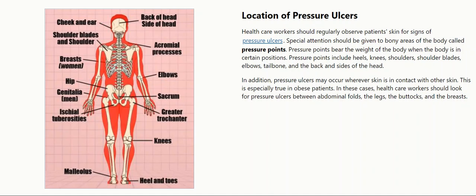Location of Pressure Ulcers. Healthcare workers should regularly observe patient skin for signs of pressure ulcers. Special attention should be given to bony areas of the body called pressure points. Pressure points bear the weight of the body when the body is in certain positions. Pressure points include heels, knees, shoulders, shoulder blades, elbows, tailbone, and the back and sides of the head.